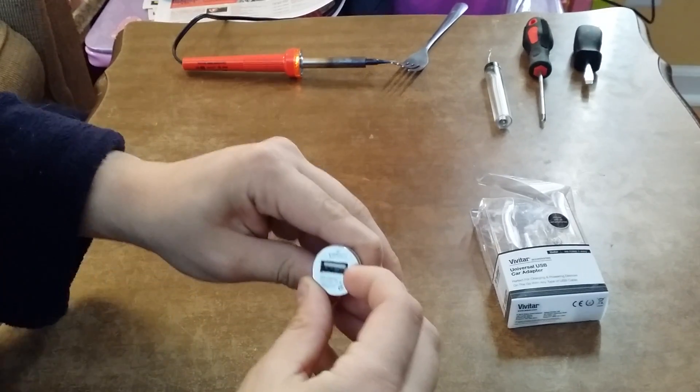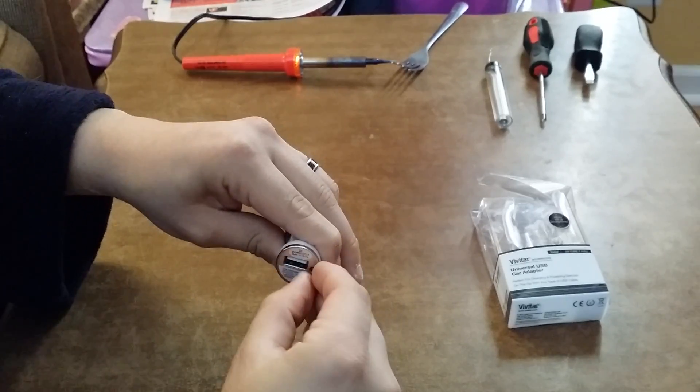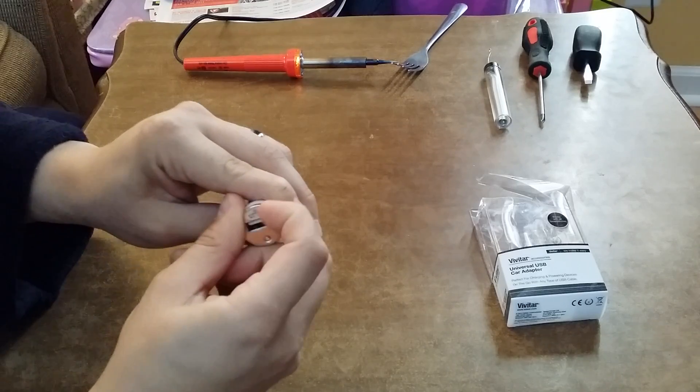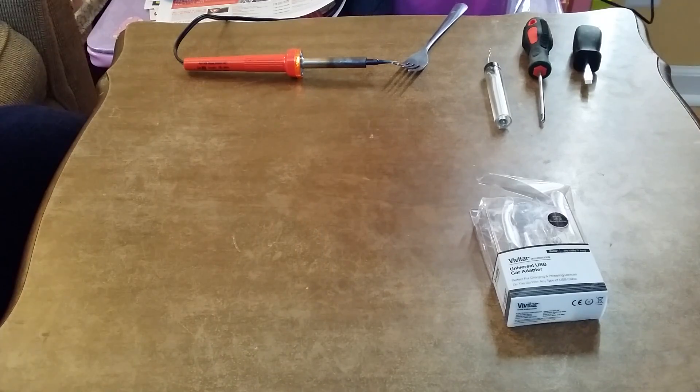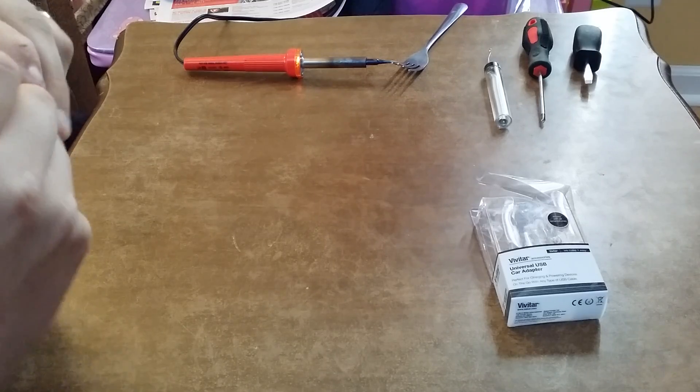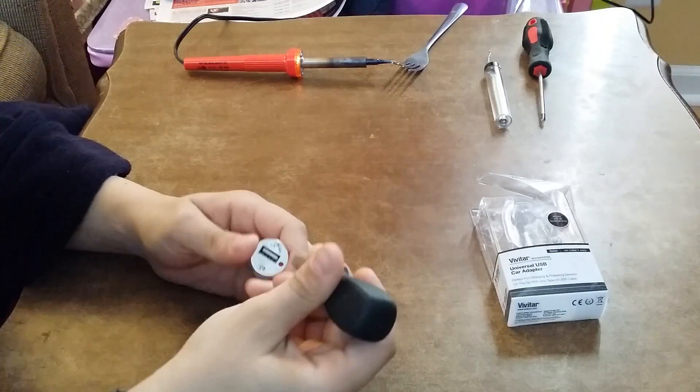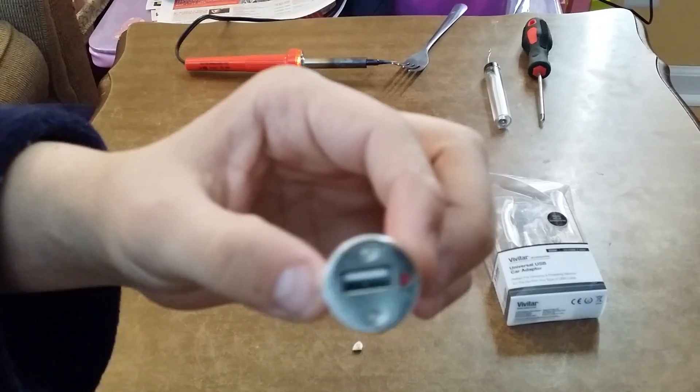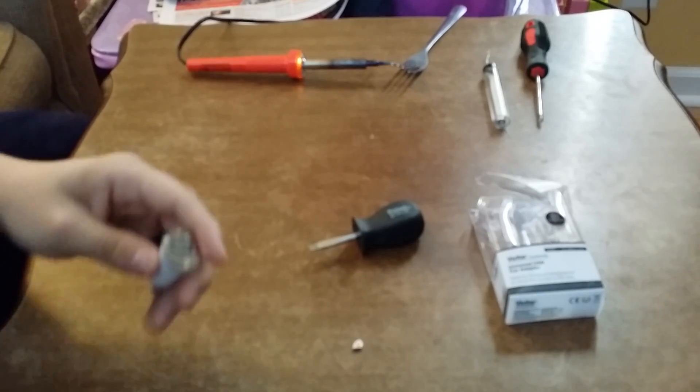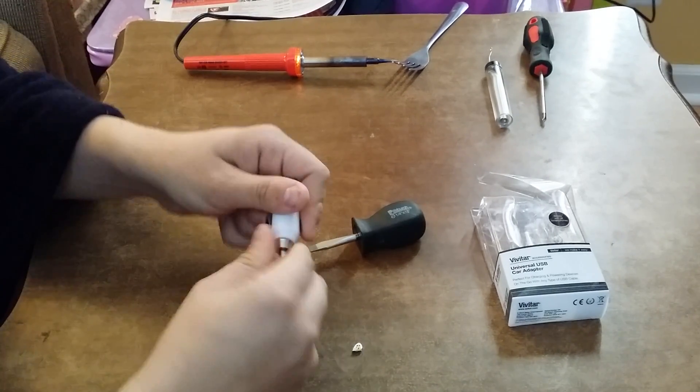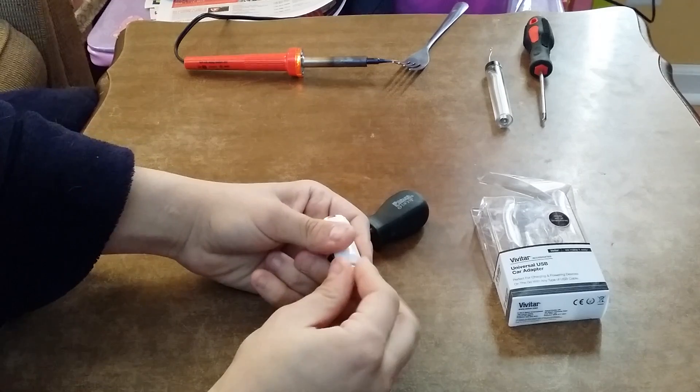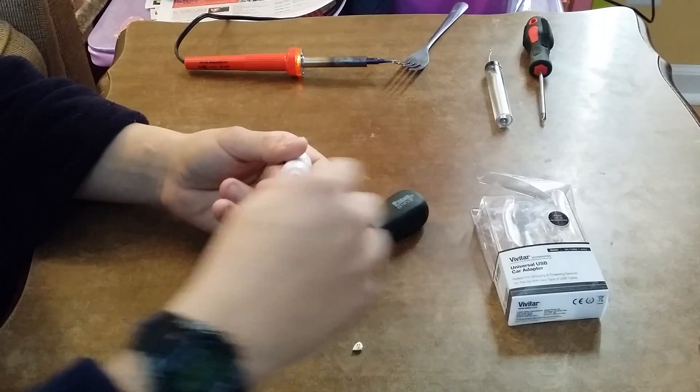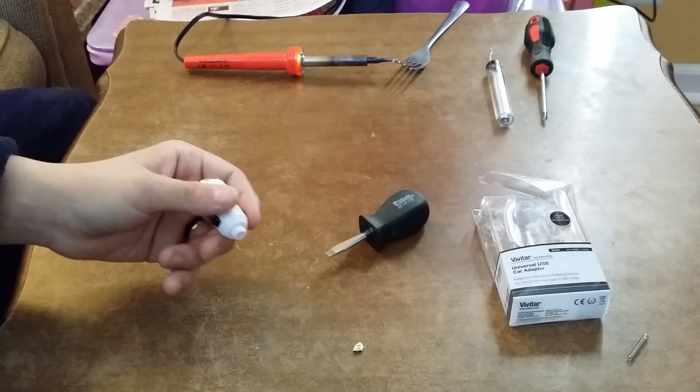Once you peel it off, you'll notice there's two screws in there. Go ahead and remove the two screws, also remove the bottom - it just twists right off. There's a little spring in there. You want to make sure you remove the spring and put it to the side. Don't lose it.